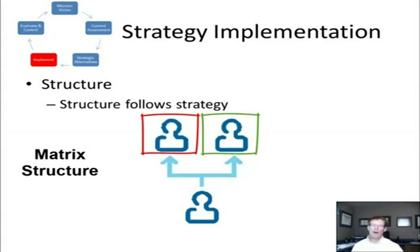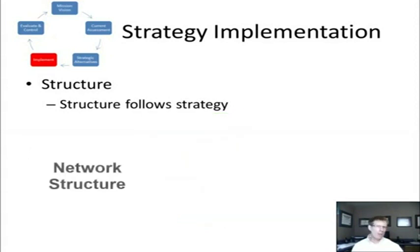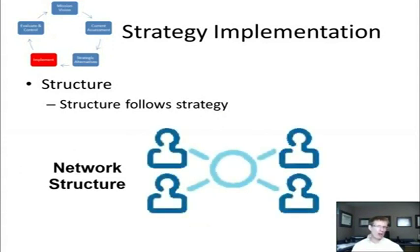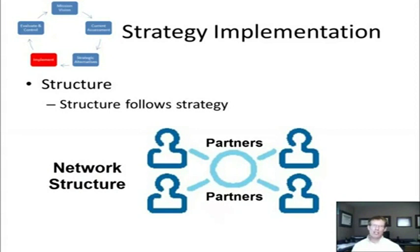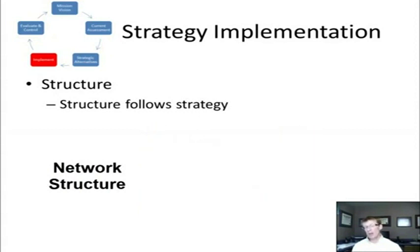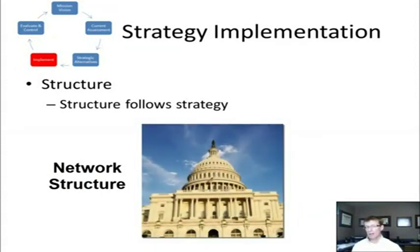The matrix structure combines the stability of the functional structure with the flexibility of the business line structure. It is best used when the external environment is complex and changing — you'll see this in the aerospace industry. Finally, the network structure is an emerging structure where most activities are outsourced to strategic partners, essentially forming a virtual organization. It's best used when the environment is unstable, requires constant innovation and quick response, and allows the company to focus on its distinctive competencies. This structure is evolving more and more in the public sector and government.